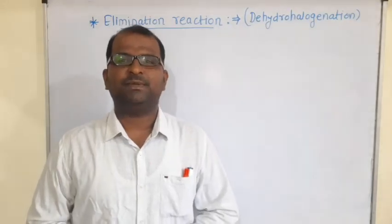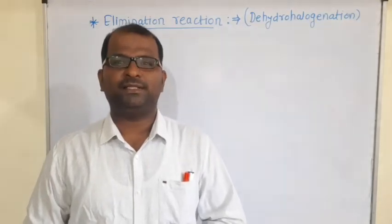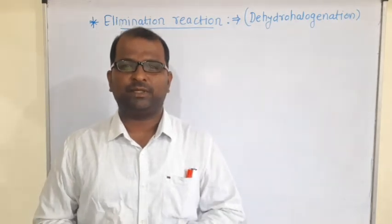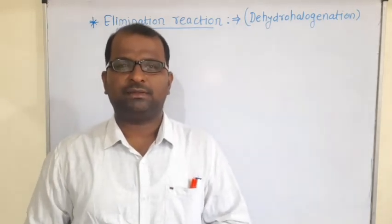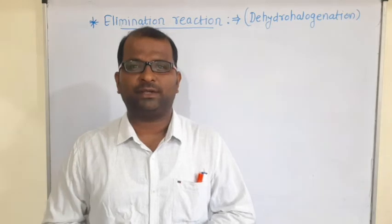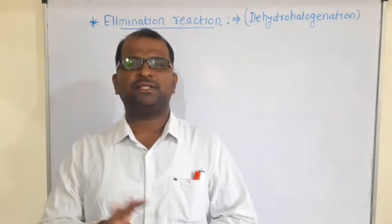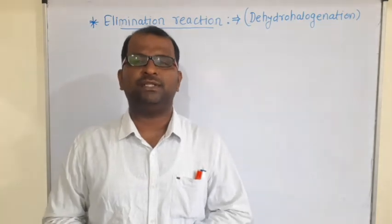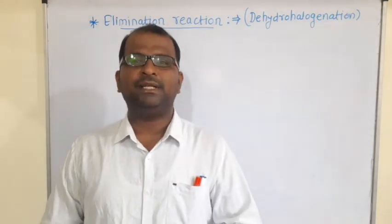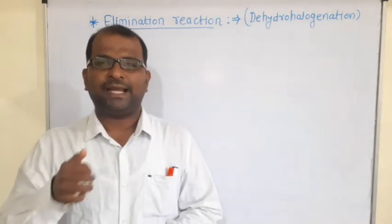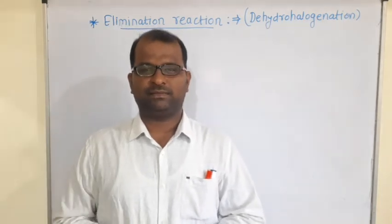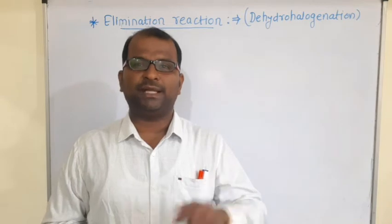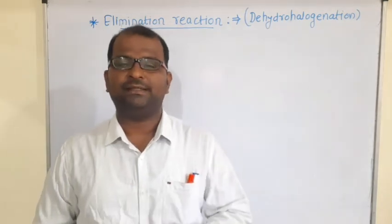Namaskar Mitra. Today we will start a new lecture on Halogen and Derivatives of Alkane. One simple point is that the type of reaction is already learned in the same way. The reaction is 4 types: addition, substitution, elimination, and rearrangement. The addition reaction is already learned in the Alkane chapter — preparation of Alkane and reaction of Alkane.